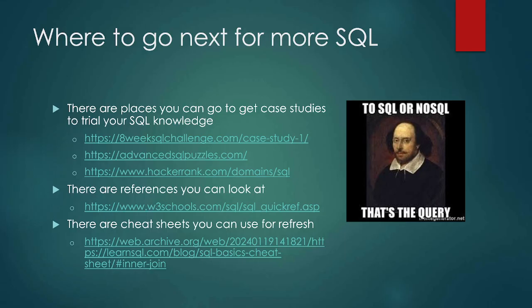Table joins can be very confusing, and one of the best ways to learn is to practice and see what you're getting. Some advanced SQL puzzles can be a good way to do it. HackerRank has different puzzles that use different types of table joins. There are also references and cheat sheets included so you can actually try these different table joins and see what they look like in context.